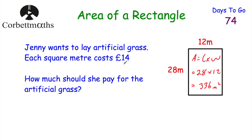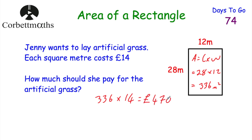Each square metre costs £14, and she needs 336 square metres. So we do 336 multiplied by 14, which equals £4,704. That's quite a lot of money — she's going to pay £4,704 for the artificial grass. Well done if you got that.